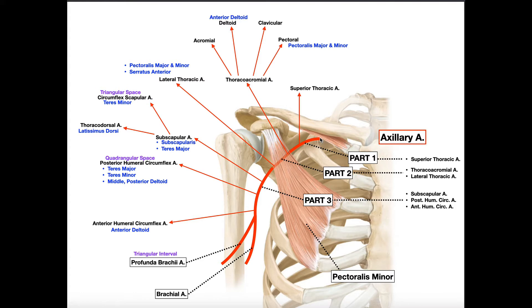There are a couple of important things about the axillary artery. One, it actually gives the names to the cords of the brachial plexus. We have a lateral cord, medial cord, and posterior cord, and those cords are named according to their orientation relative to the axillary artery. So the lateral cord is lateral to it, the medial cord is medial to it, and the posterior cord is directly behind it since we're looking at an anterior view.